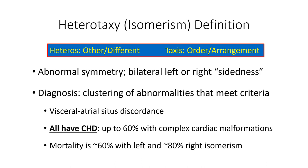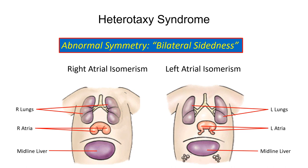In these fetuses the liver is usually bilaterally symmetrical, and the stomach may be left-sided, right-sided, or midline, essentially due to a common gastrointestinal mesentery. The lungs may be bilaterally trilobed, most often seen with right atrial isomerism, or bilaterally bilobed, often seen with the left atrial isomerism subtype.